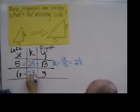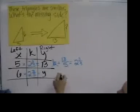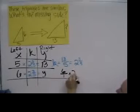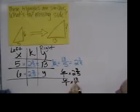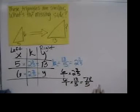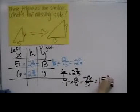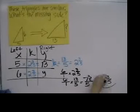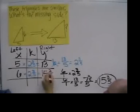So 6 times 2 and 3 fifths is going to equal our missing height. We do 6 over 1 times 13 fifths, which is equal to 78 over 5. Let's see — 5 goes into 7 one time with 2 left over, that goes into 15... so 15 and 3 fifths is our missing value. 15 and 3 fifths.